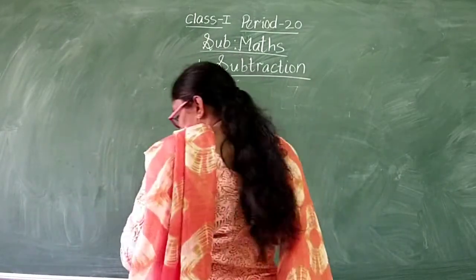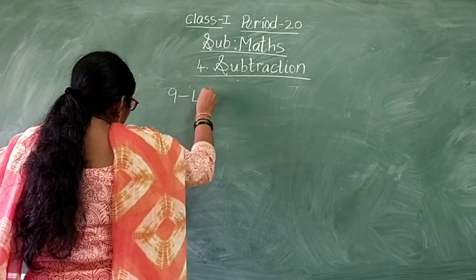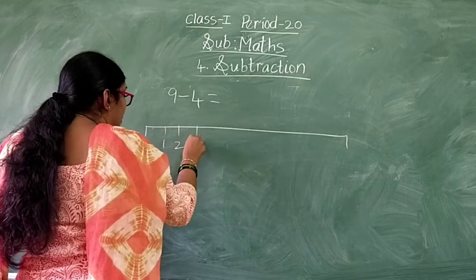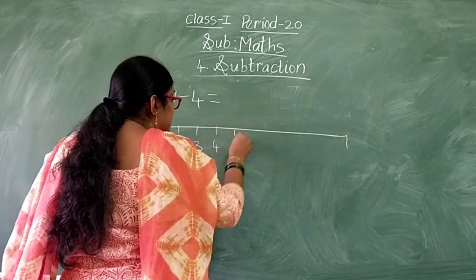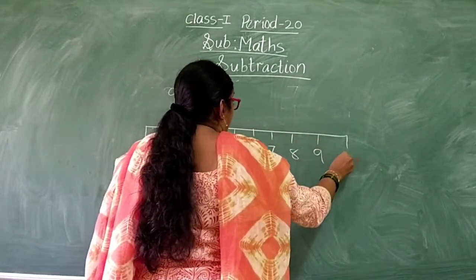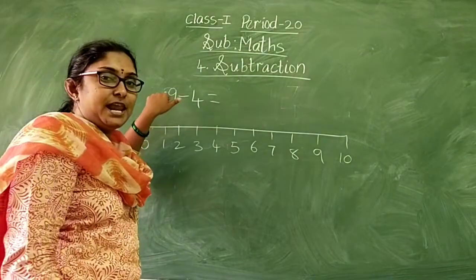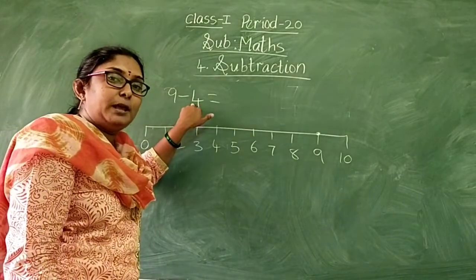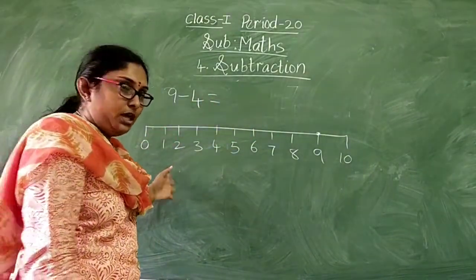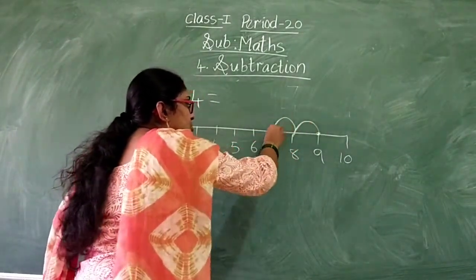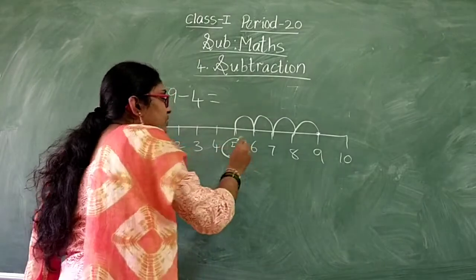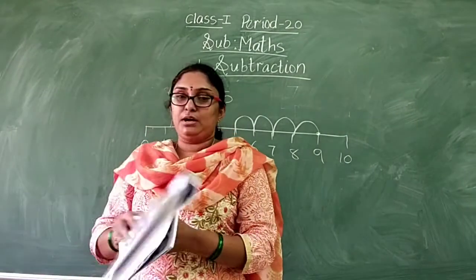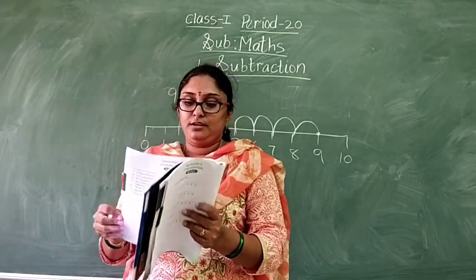Another example: 9 minus 4. On the number line, which starts from 0, I am writing up to 10. Start at 9. The second number is 4, so we make 4 jumps backward: 1, 2, 3, 4 — and we land on 5. So 9 minus 4 is 5. Like this you have to do number line subtraction.